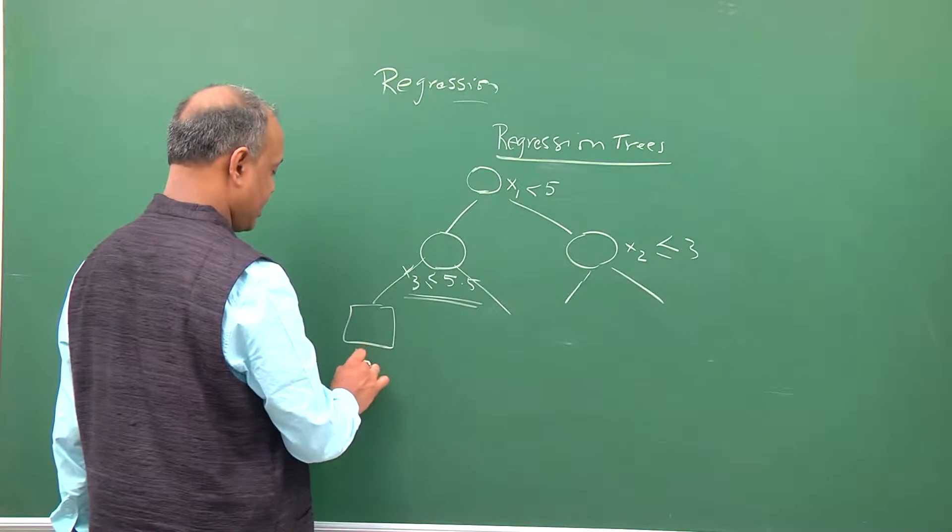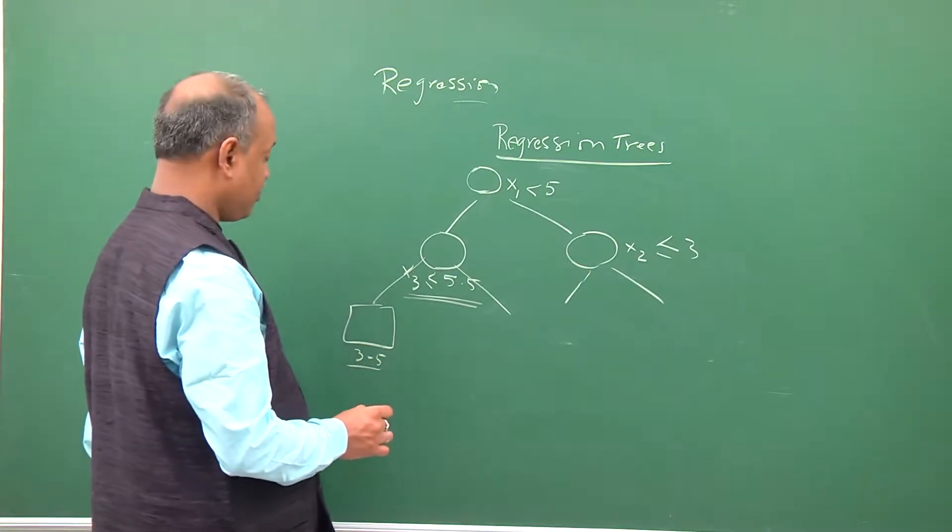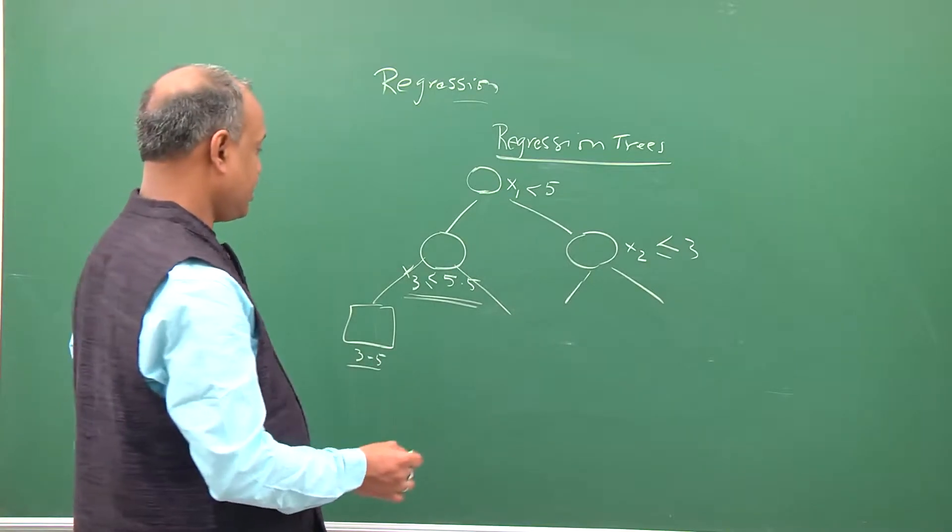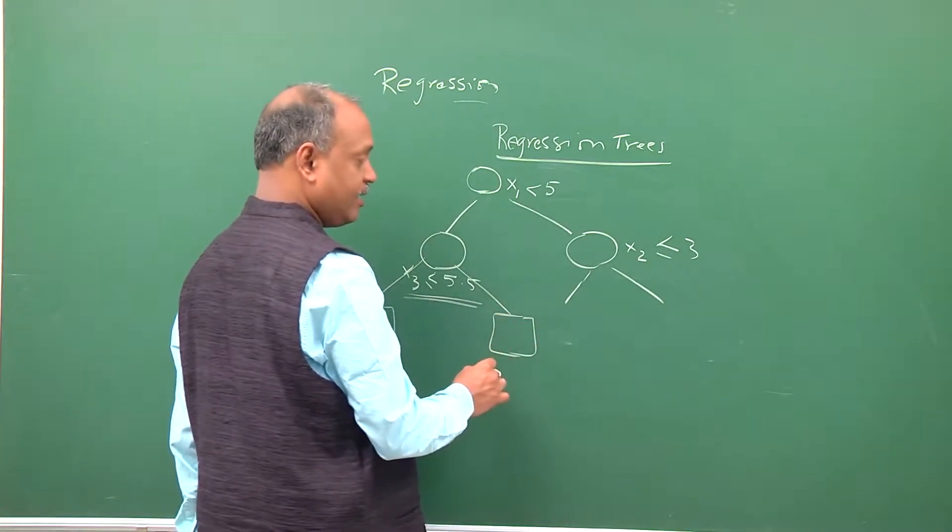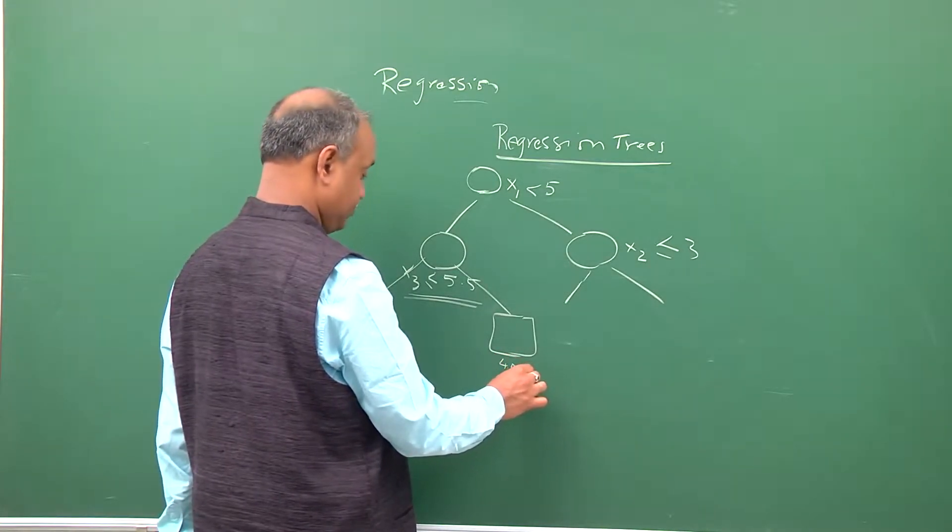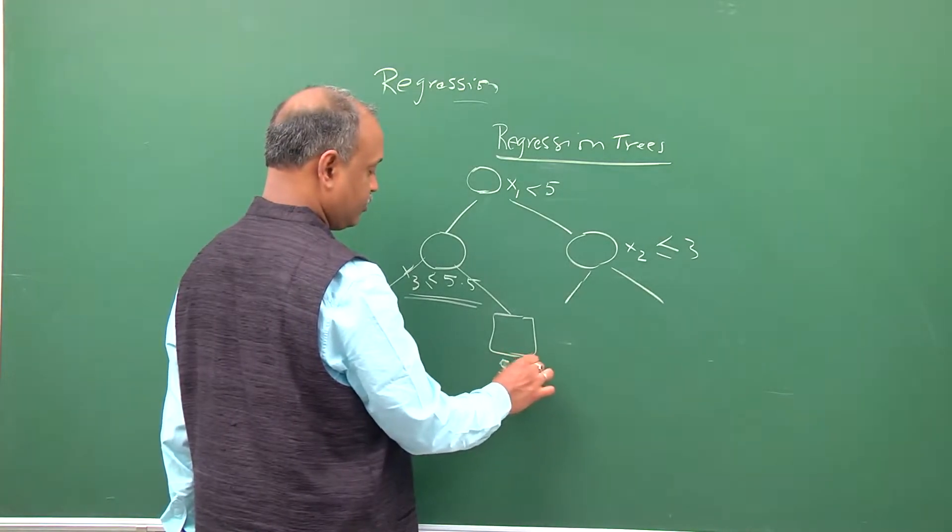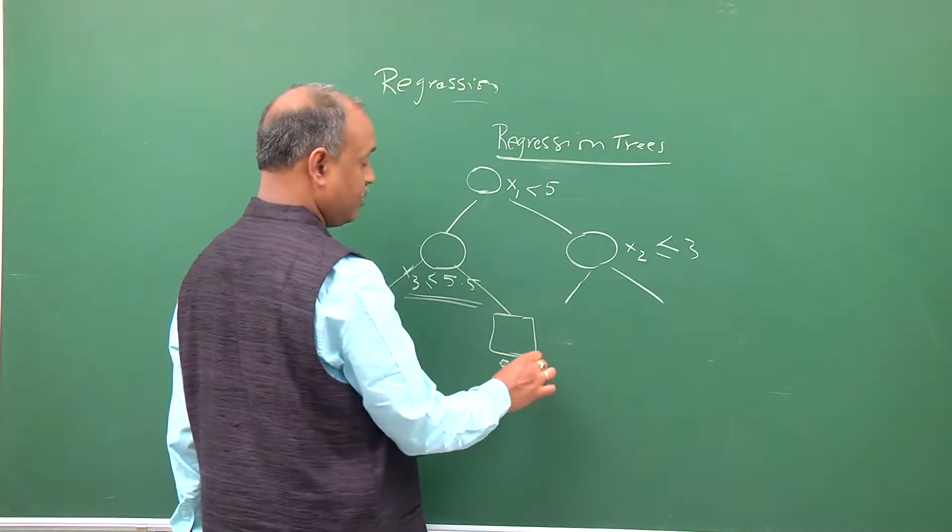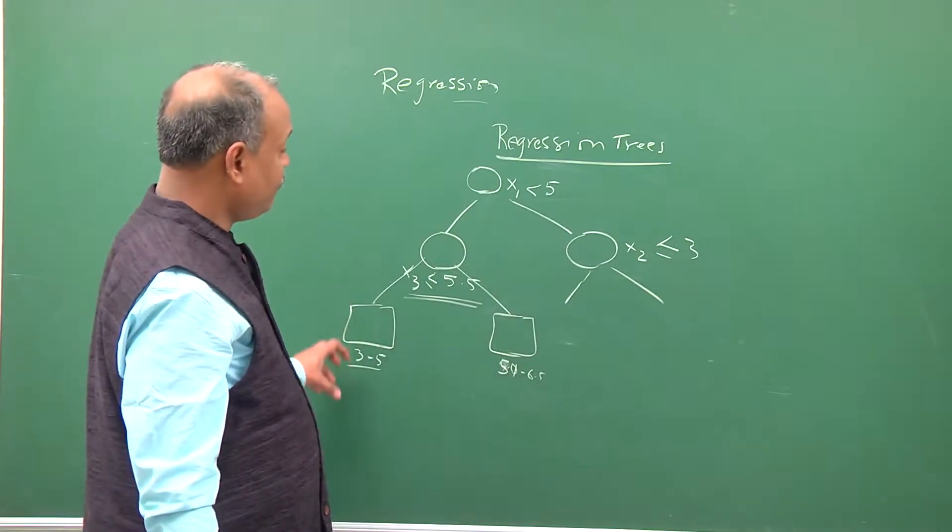Say between 3 to 5: 3.1, 3.2, 3.4. Simply here you may have a range of data points between 5.1 to 6.5. The idea is this is something which is parameterized in terms of the leaf node, what is the range you are looking at.